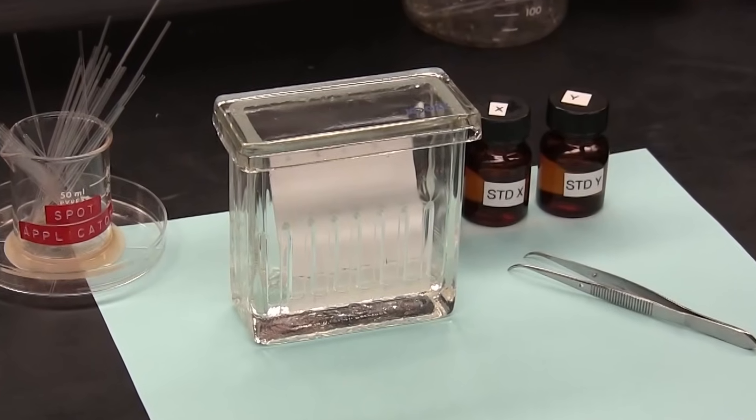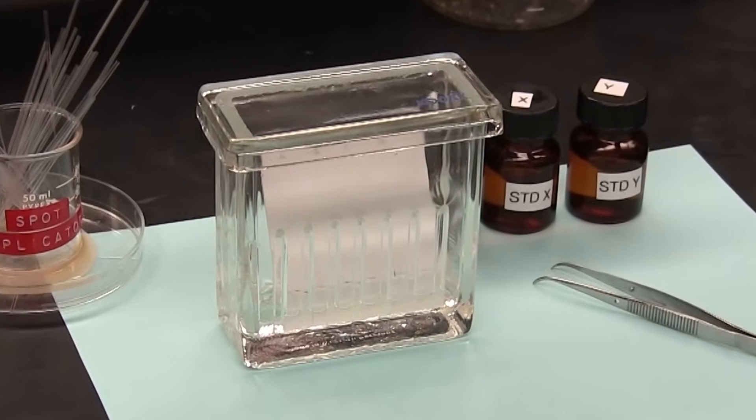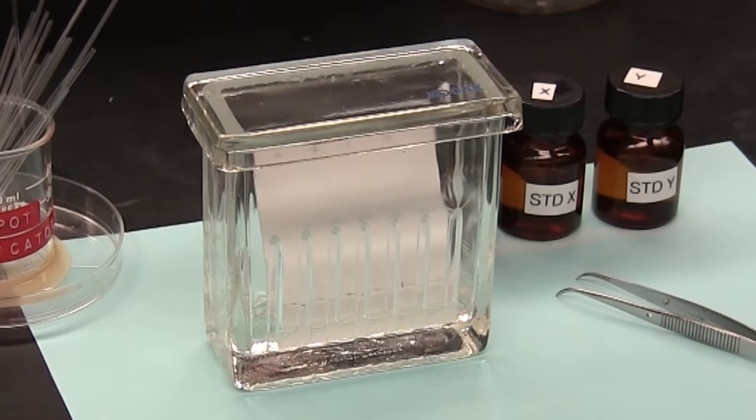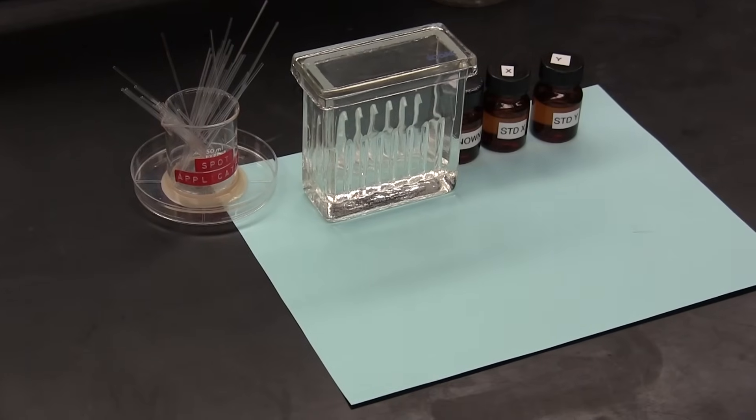Separated components can be identified by comparing how far they travel along the plate relative to reference material, also known as standards. Let's take a closer look.